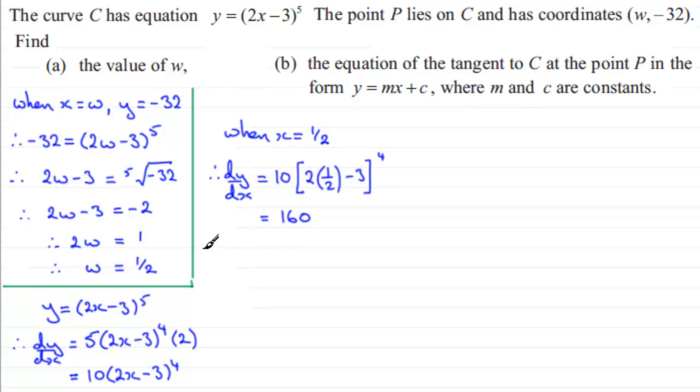But anyway, what we've got here is therefore the equation of the tangent. Okay, just write this intro here. Therefore equation of tangent at P is. And what is it going to be? Now I might say write it in the form y equals mx plus c. But what I'm going to use is the form y minus y1 equals m bracket x minus x1. Where x1 and y1 are w and minus 32 respectively. So what we've got here is therefore we've got y minus y1 minus minus 32 equals m the gradient, which we've seen is 160. And that's multiplied by x minus x1. And x1 is w, w being a half.